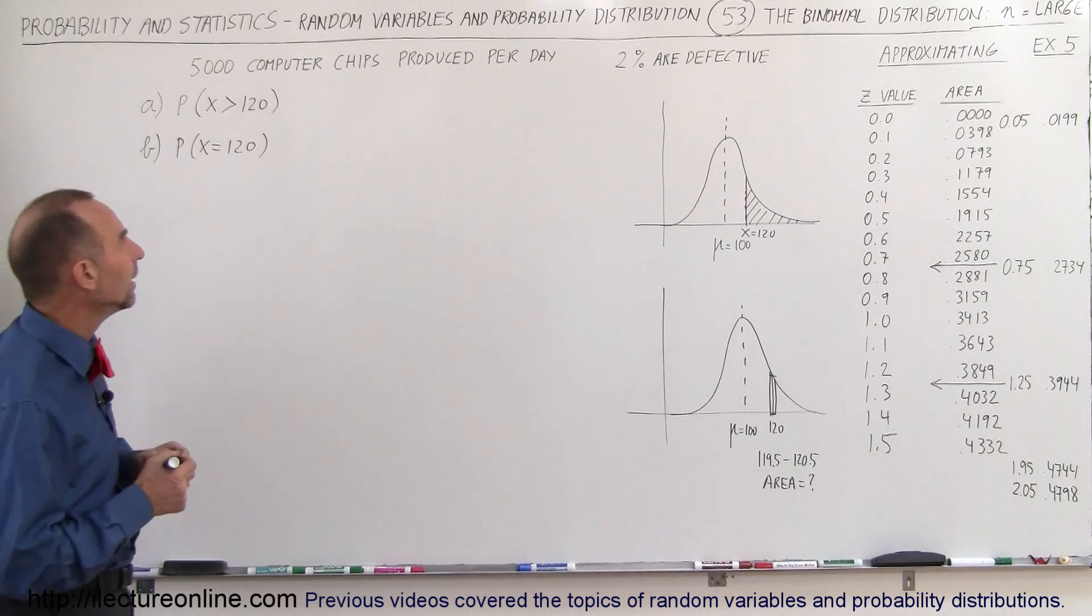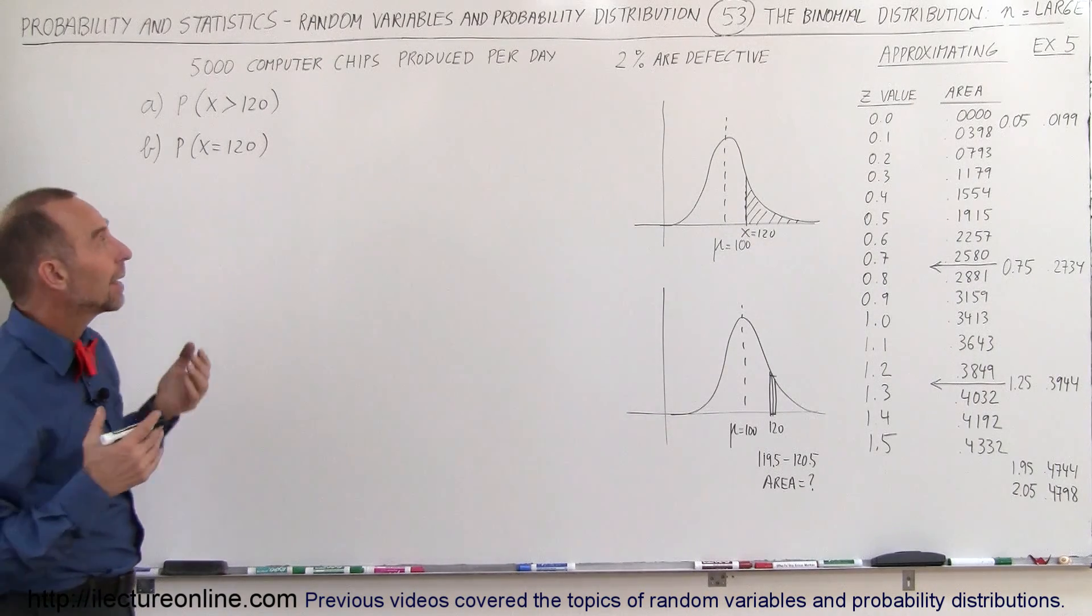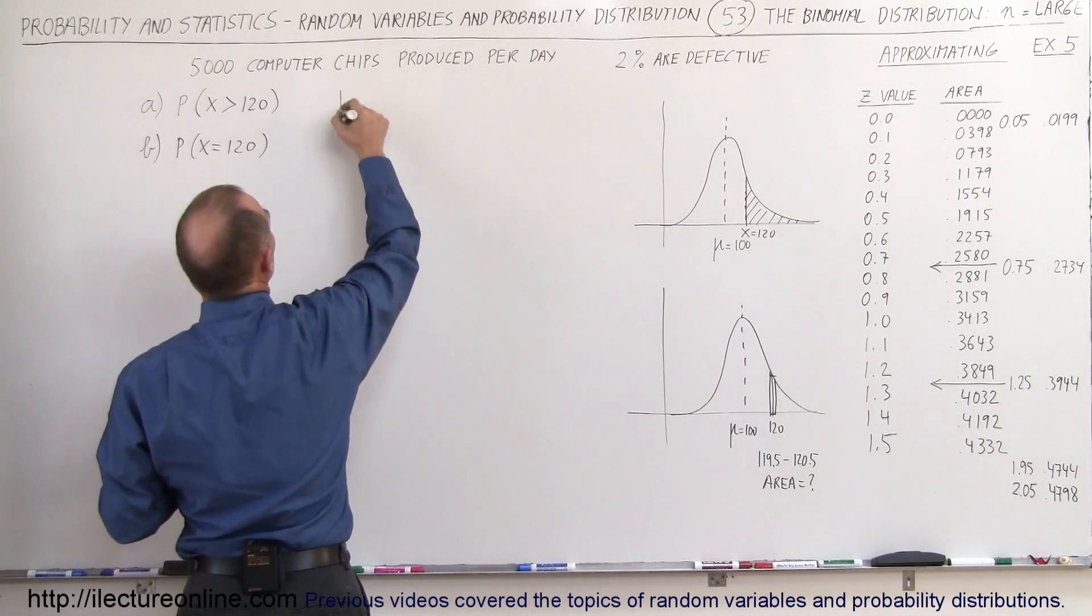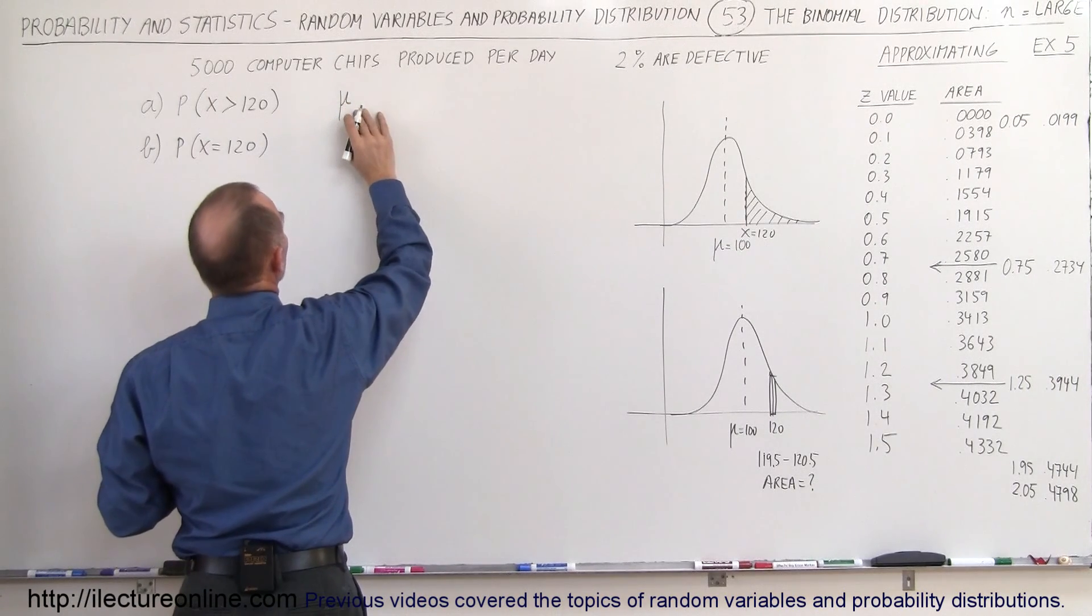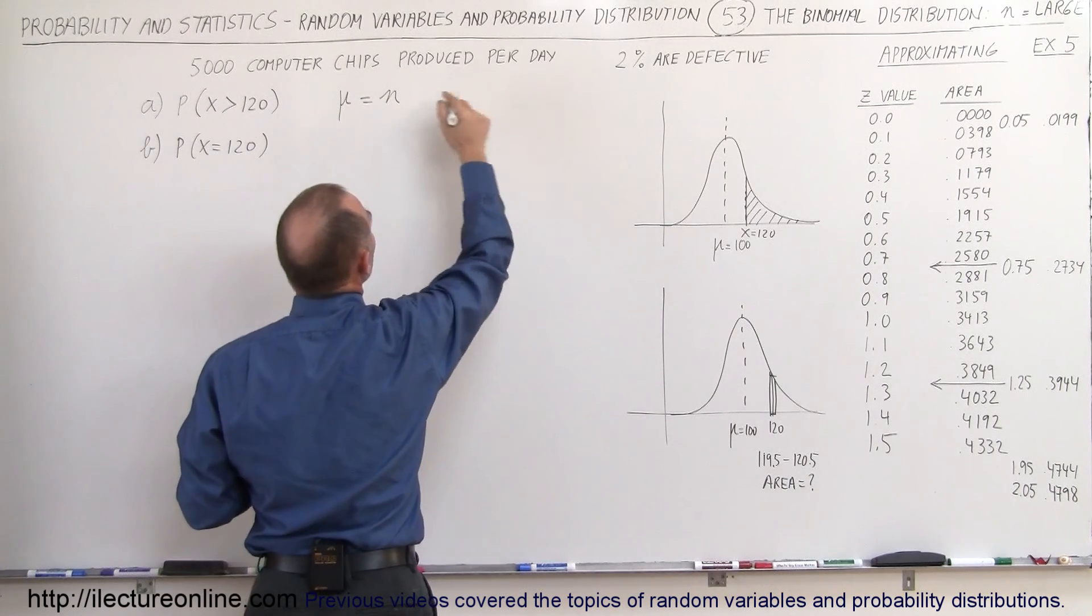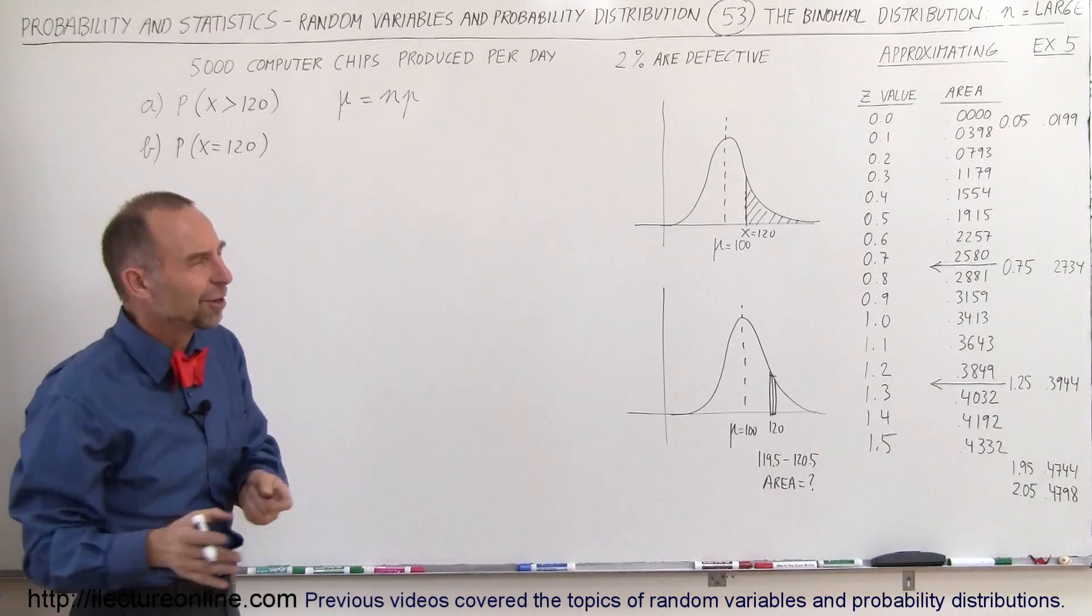For part A, we need to figure out first what the average is. The average number of defective chips would be mu, the expected value, which is equal to the number of samples, 5,000, times the probability of success. In this case, success would be a defective chip. Seems kind of strange, but that's how it works.